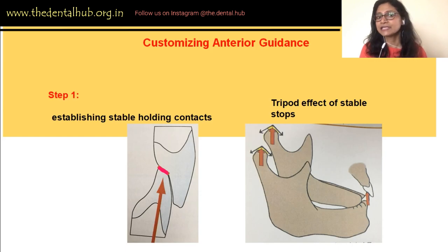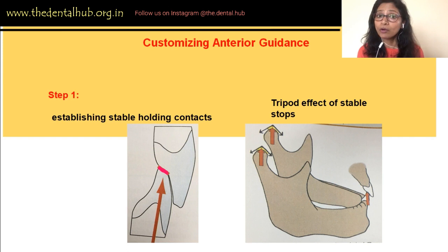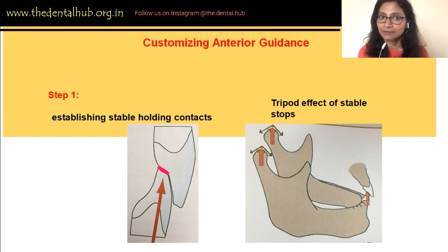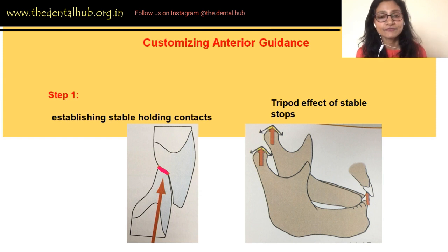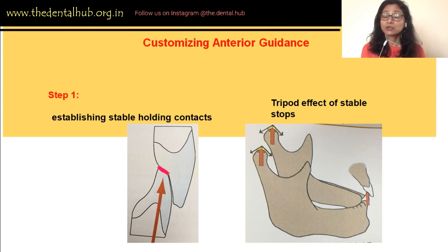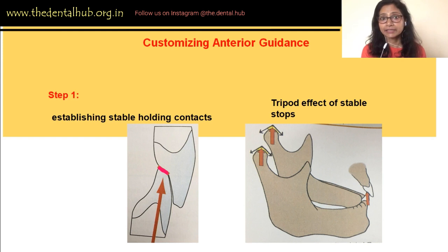Next is the customization of anterior guidance, which we do when performing extensive restorative work in the anterior segment by creating provisional crowns. We start at the lingual surface, creating stable holding centric stops on the cingulum area, so that when the mandibular incisors move superiorly to contact the lingual surface of the maxillary incisors, they find this stop and stop there. Without a stable stop, the incisors would slip and slide, causing excessive wear of the lingual surface of the maxillary incisors and the incisal edge of the mandibular incisors, eventually resulting in breakdown of the anterior teeth.